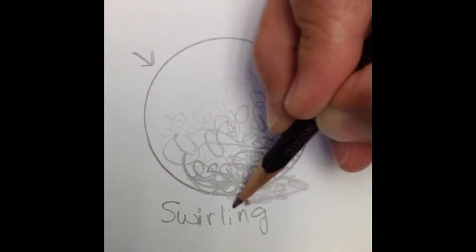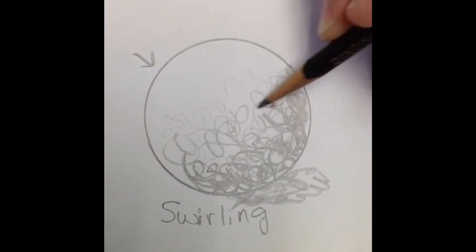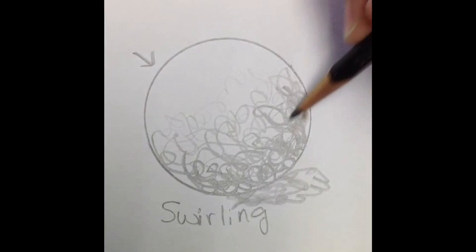Really focus on the swirling randomness to your lines. A lot of people like to do the cast shadow with just shading, but you can use swirling also. Remember to pause.